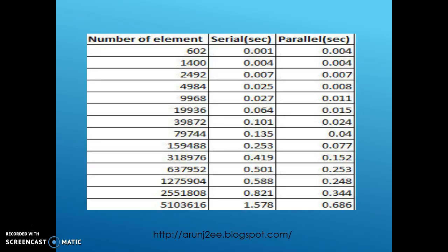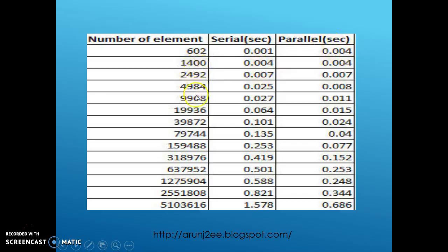Here is a comparison between the number of elements and the time it takes in serial sort versus parallel sort. In the beginning, when the number of elements are less, serial sort takes less time compared to parallel sort. But as the number of elements keeps increasing in the array, serial sort does not perform as well as parallel sort, and parallel sort comes to the rescue taking optimal time to sort the arrays.